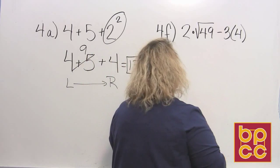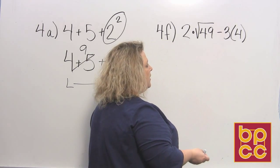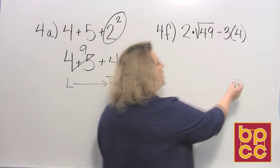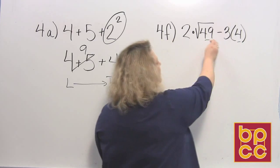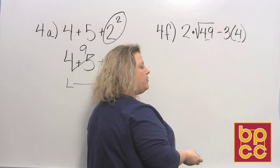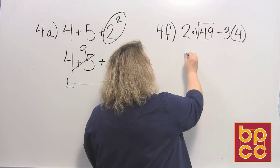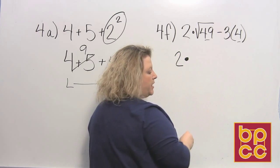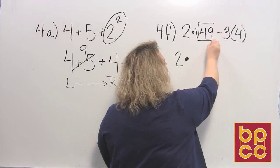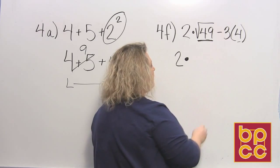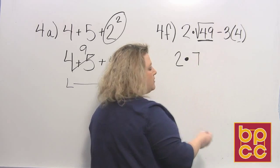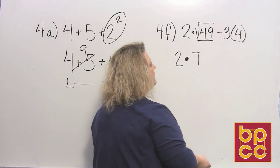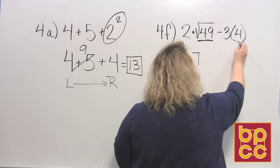Now the next problem has a couple of grouping symbols. It's got parentheses and a square root, so we want to make sure we do that first. This is 2 times—the dot means multiplication. We want to take the square root of 49. Well, the square root of 49 is 7 because 7 × 7 makes 49. Then I see these parentheses.